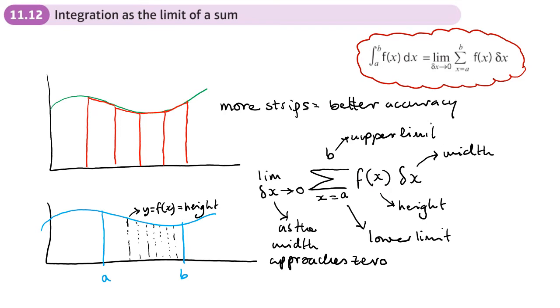Now, we're not going to sit down and work that out. But what that equals as delta X tends to zero, what we get is this, the integration of F of X, dx.